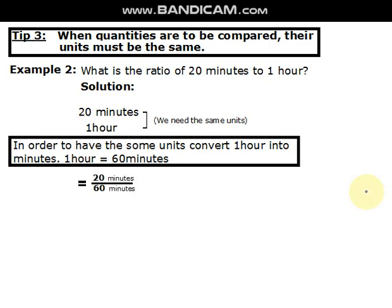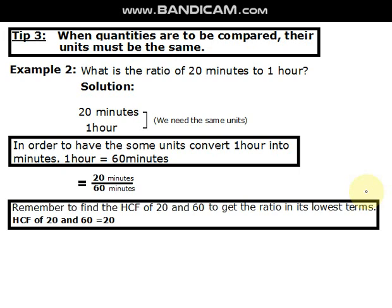Now, we have 20 minutes over 60 minutes. Remember that to find the highest common factor of 20 and 60 will help us to get the ratio in its lowest terms.